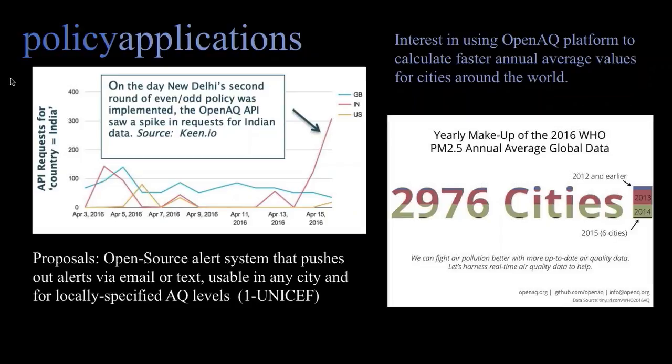We also know of a group that submitted a proposal to UNICEF using our system to build an open-source alert system — something we get requests for all the time — that pushes out air quality alerts via email or text, usable in any city, with locally specified air quality standards and changeable language.